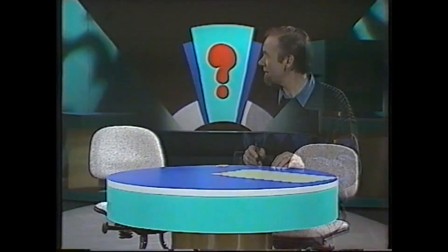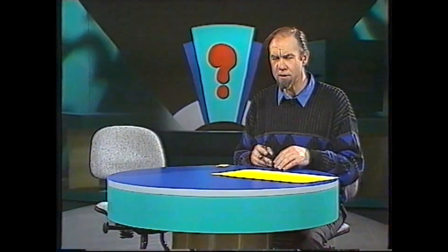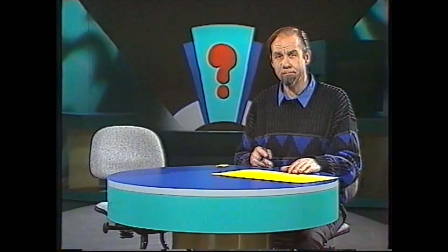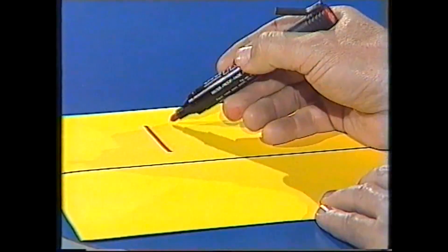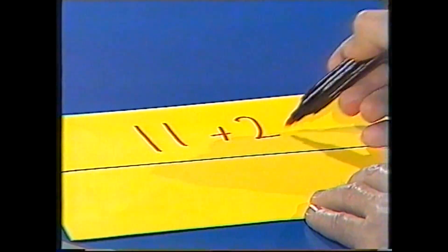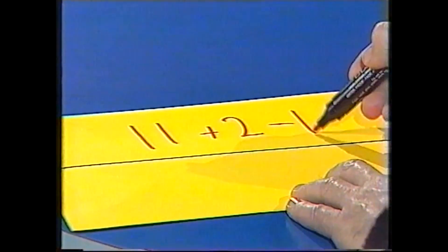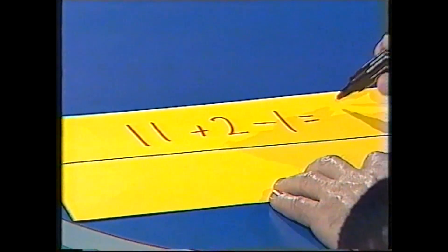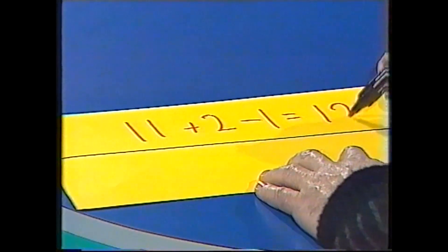Thanks, Dean. And now a simple calculation. Try this — it's very easy. 11 plus 2 minus 1. Well, 11 plus 2 is 13, minus 1 equals 12. Let's calculate it: 11 plus 2 minus 1 equals 12. Very simple.